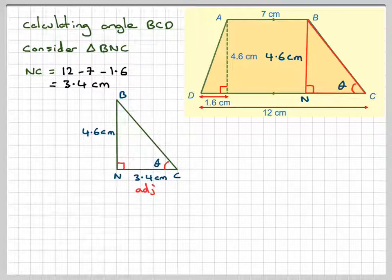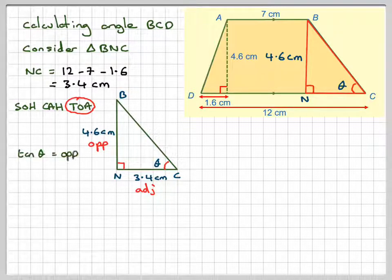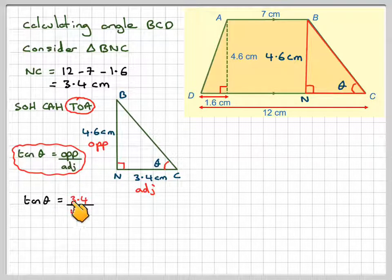And labelling the side. Adjacent. Opposite. And angle. So SOH CAH TOA again. I've got opposite adjacent. So I'm going to use TOA. So tan theta is opposite over adjacent. So tan theta is going to be 3.4 over 4.6.